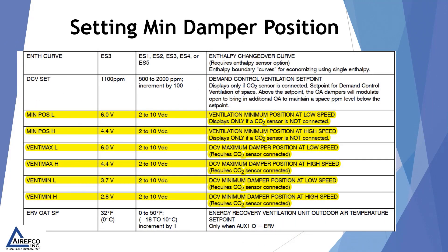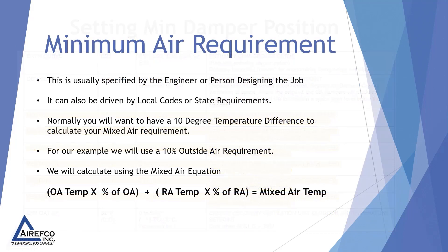One of the things that most installers and technicians need to do on an economizer is set the minimum damper position. Using the Jade Controller it's a little bit difficult to understand, as you're setting a 2 to 10 volt DC voltage rate and not a percentage. In order to set the minimum damper position you need to know what your minimum air requirement is. This is usually specified by the engineer or the person designing the job, and can also be driven by local codes or state requirements.